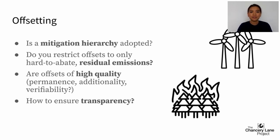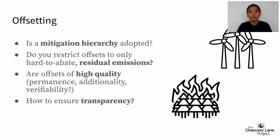Do these offsets have additionality — in other words, but for you paying for this tree, would it have been planted anyway? Are they permanent? In 10 years, will a wildfire burn down the tree that you bought via your offset, thereby releasing the carbon sequestered back into the atmosphere? And above all, how do you verify these things?